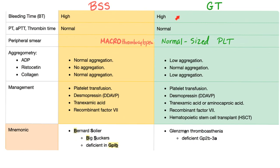Bleeding time is high in both because the platelets are dysfunctional in either case. PT, PTT, and thrombin time are normal because the coagulation cascade is intact — these are problems in primary hemostasis, not secondary hemostasis.